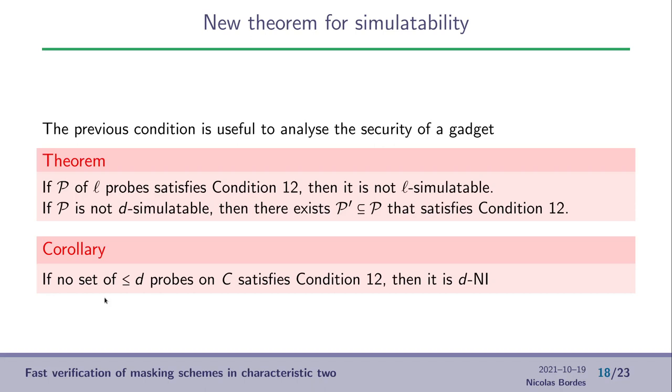Thanks to this corollary, we can design an algorithm that will go over every set of L probes, and check if it satisfies condition 12, and at the end, if no set of probes satisfies the condition, then we have proven the d-NI property of the gadget.